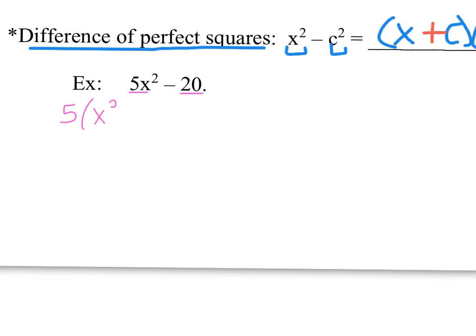When we do that, we have x squared left over in the first term, and it's subtraction. 5 out of 20, we would have 4 left over. And 4 is the same as 2 squared. So there's kind of our format of x squared and then c squared.